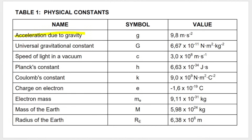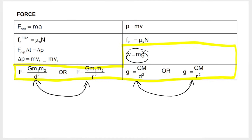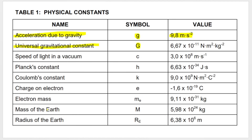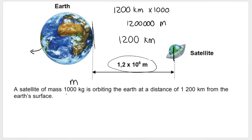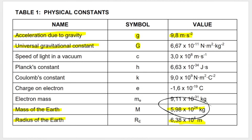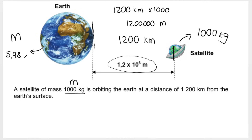You get acceleration due to gravity — that's 9.8 m/s² downwards — and the universal gravitational constant, big G, which appears in the formulas. On the physical constants table, you also get the mass of the Earth and the radius of the Earth. So in this question, we don't only know the mass of the satellite, which is 1000 kilograms — we also know the mass of Earth, which is 5.98 × 10²⁴ kg. That's very important.